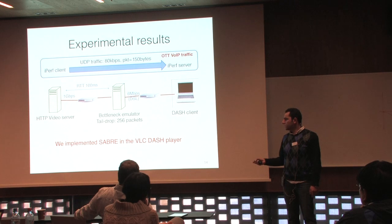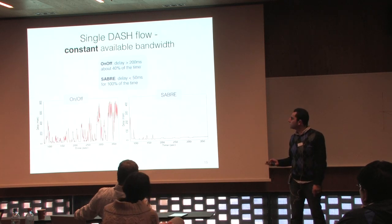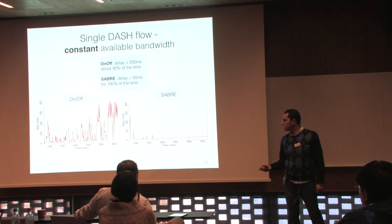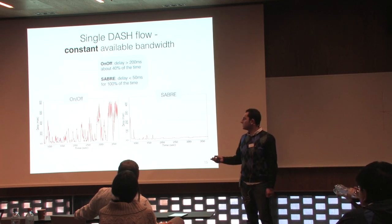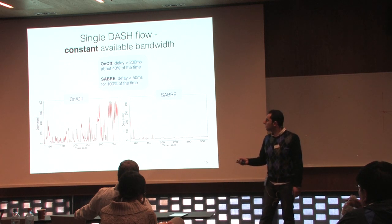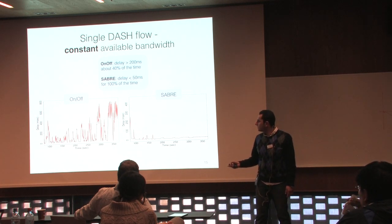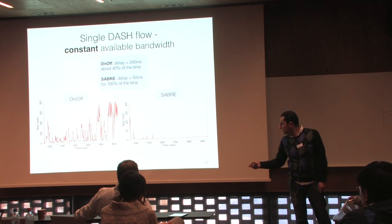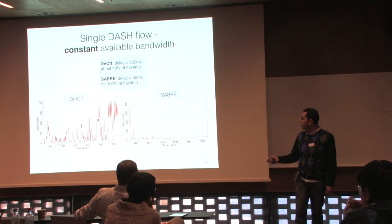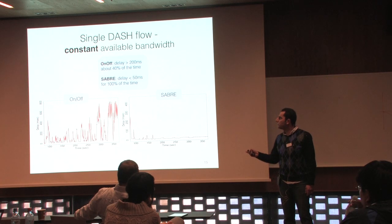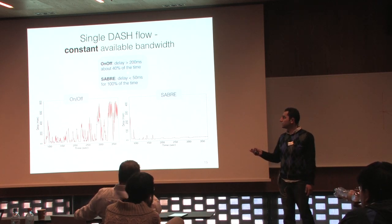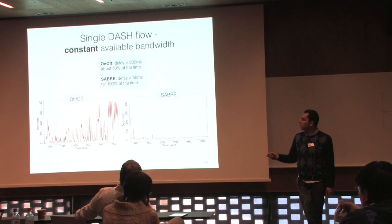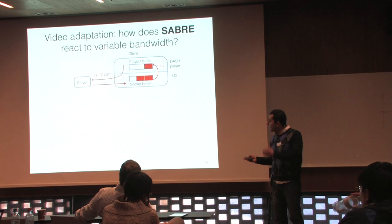We implemented SABRE in the VLC DASH player and ran experiments on the same testbed. For the traditional on-off player, queuing delay reaches 400, 600, even 700–800 milliseconds. With SABRE, it's mostly below 50 milliseconds. For on-off, delay exceeds 200ms about 40% of the time; with SABRE it's below 50ms nearly 100% of the time.